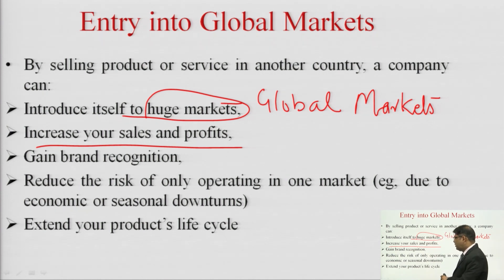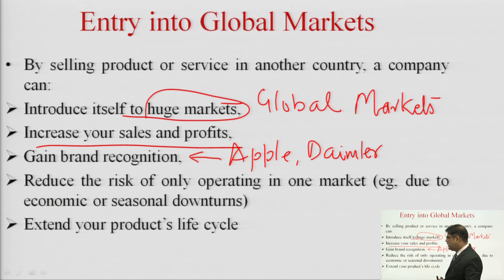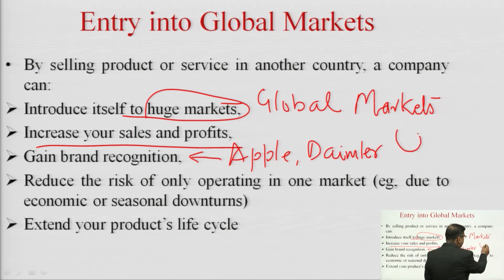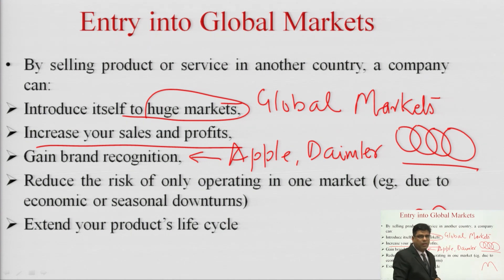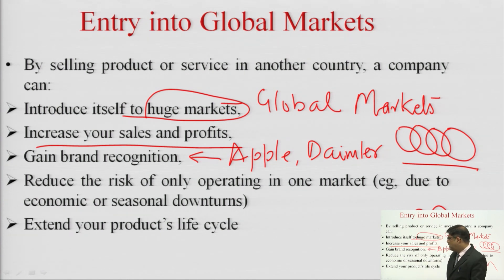The third advantage of going into other countries is gaining brand recognition. Today we have Apple and companies like Daimler, an automobile manufacturer in Germany — all having a global presence with brands recognized worldwide. For instance, if I draw four rings it is evident I am talking about Audi, and if I draw an 'M' it can be automatically recognized as McDonald's. Such strong brand recognition comes only when companies decide to go into other markets.